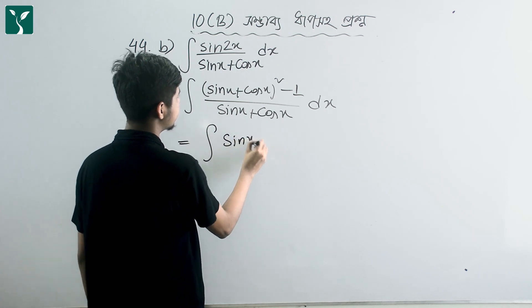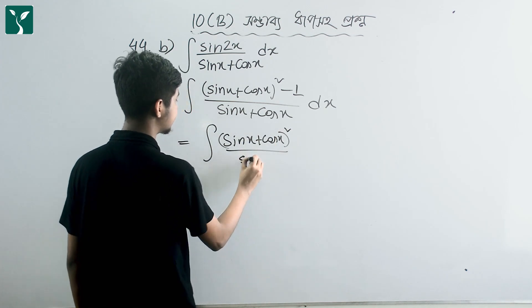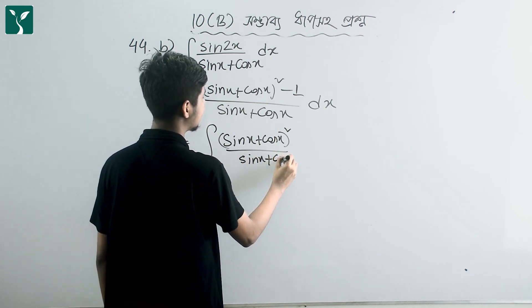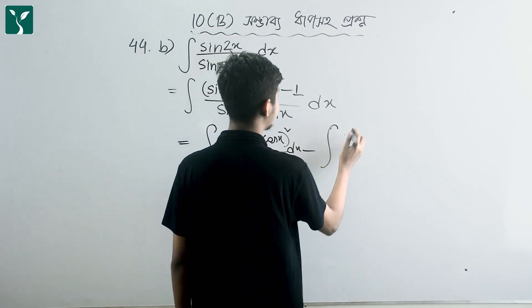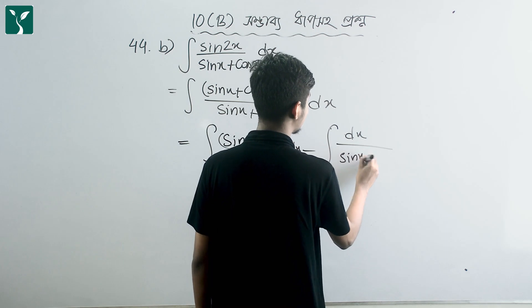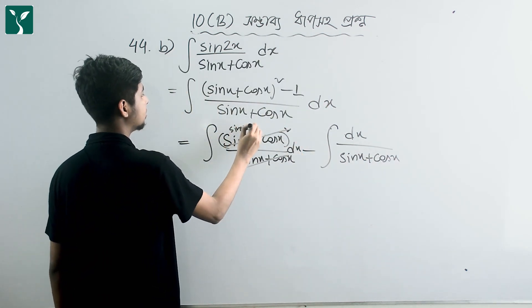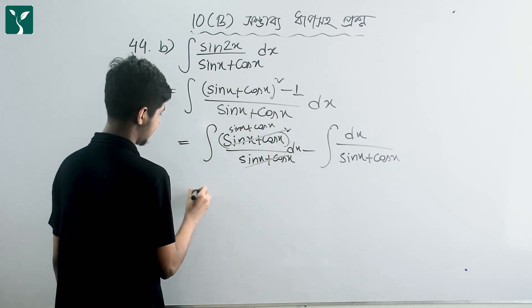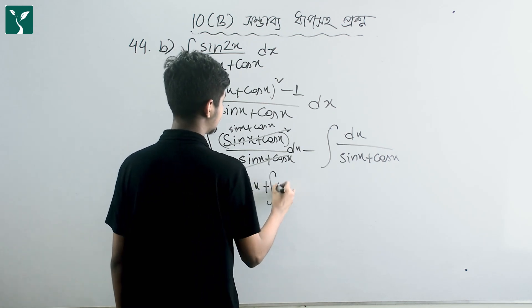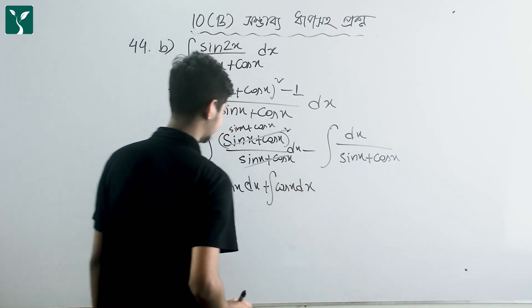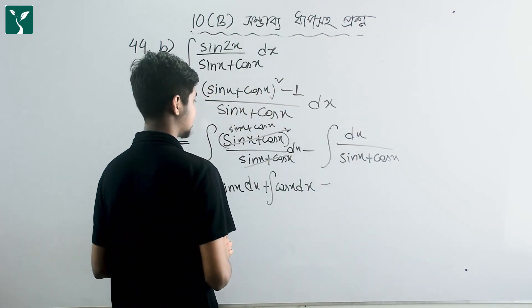So the integral becomes: sin x plus cos x whole squared minus 1, divided by sin x plus cos x. We can split this into integration of sin x plus cos x dx minus integration of dx divided by sin x plus cos x.